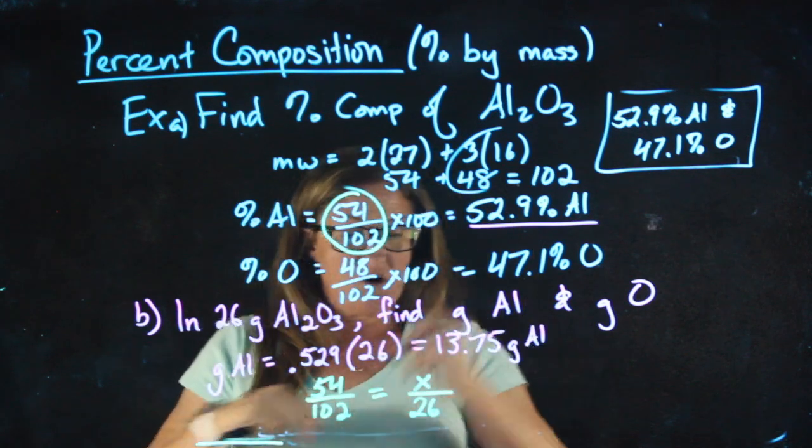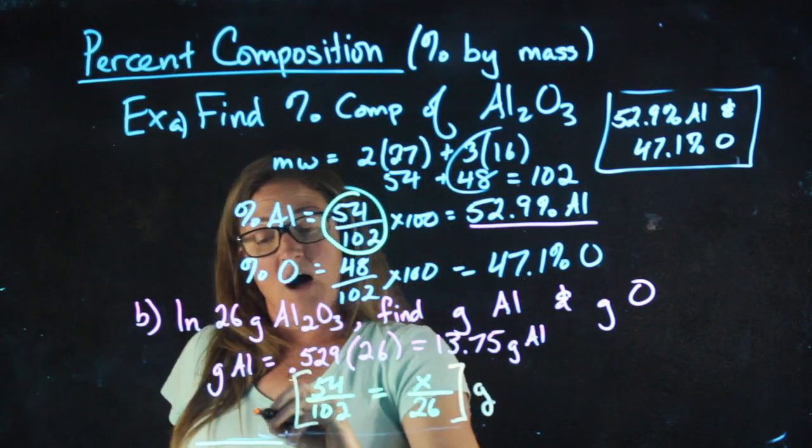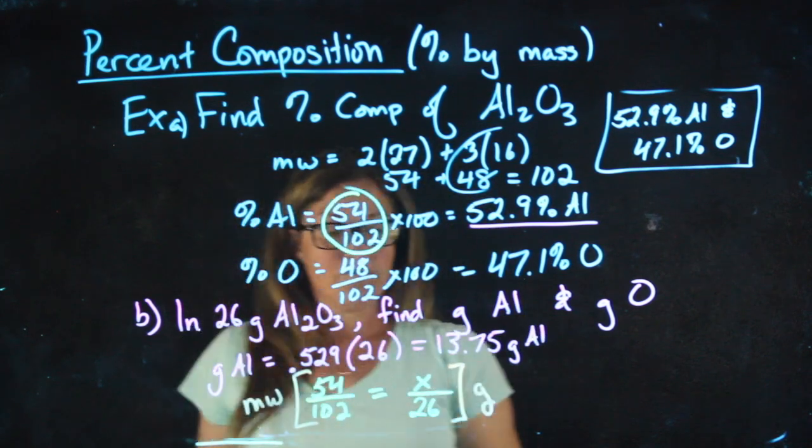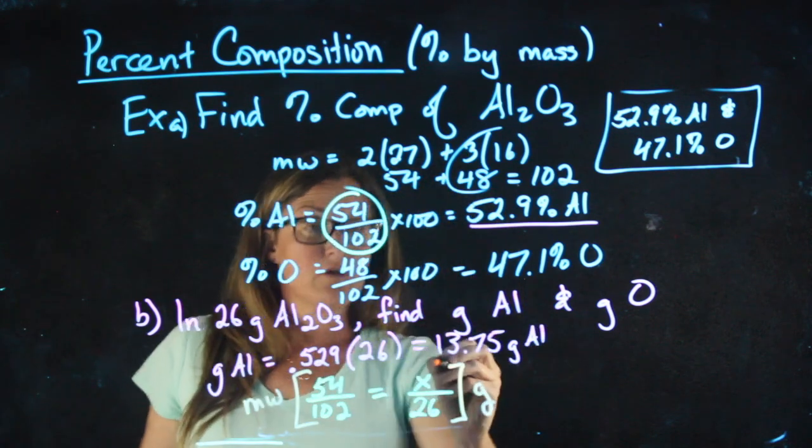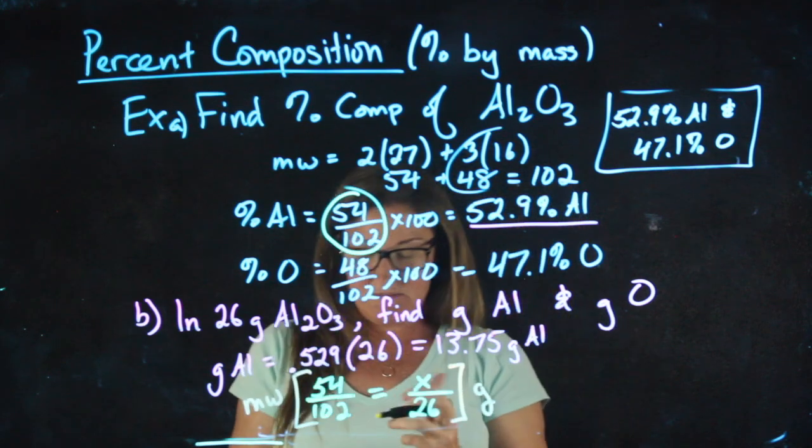So in this proportion, on this side, I have grams. On this side, I have molecular weight. And in both cases, I have the part over the whole. This will also give me 13.75 grams.